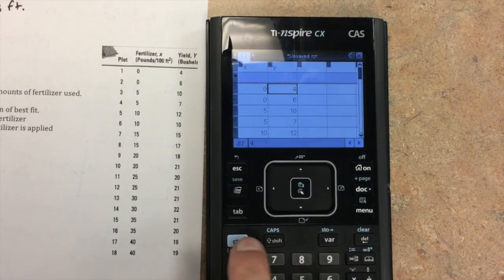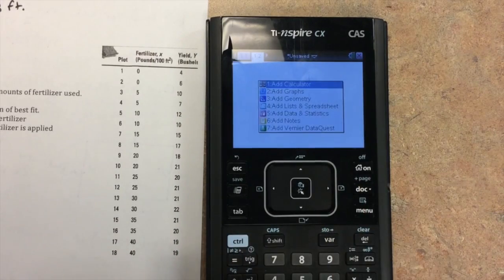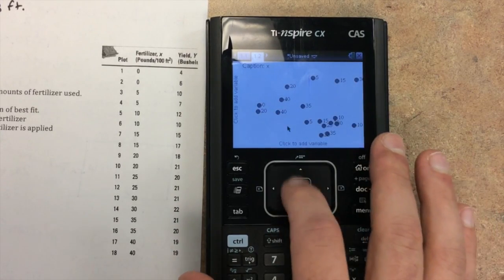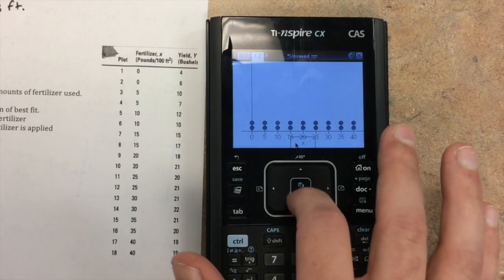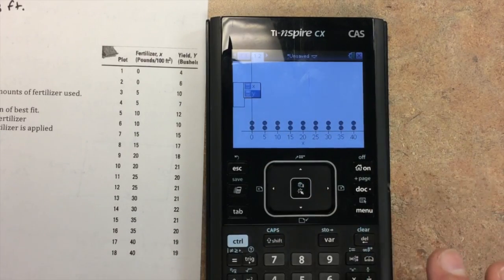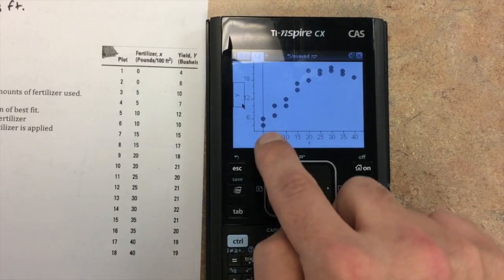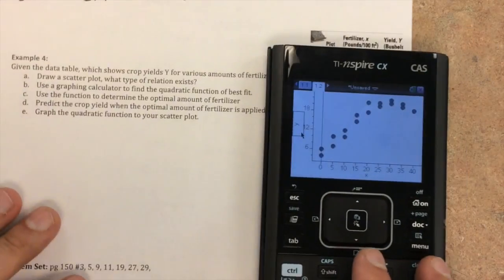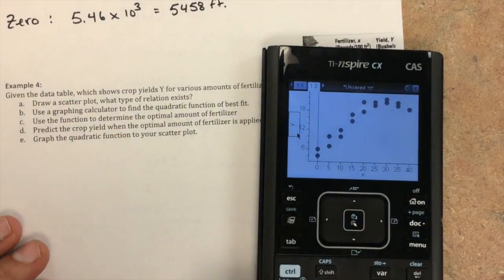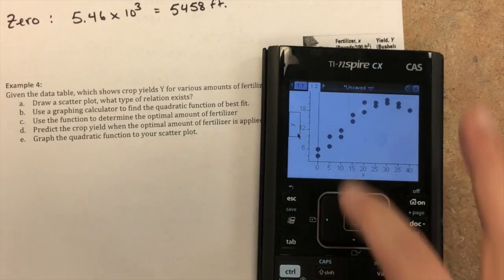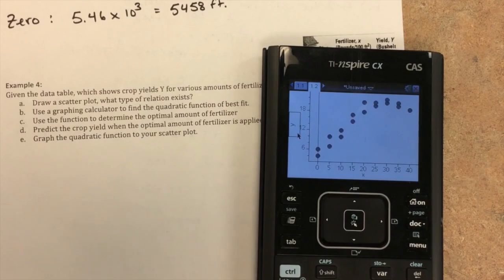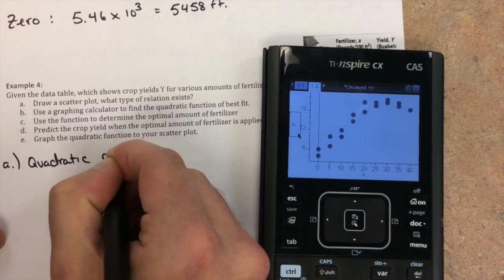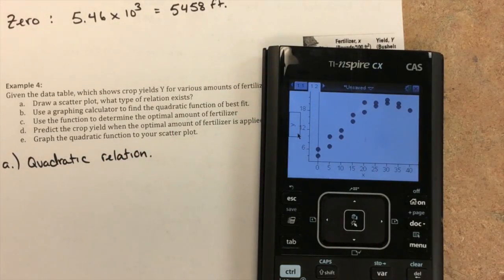Now, like we did before, we're going to hit control document to create a new document. And we're going to go down to add data and statistics. So, again, go back to my X axis. I select my X variable. Go to my Y. Select my Y column. And I can see that it's starting to curve. So, if I look at A, it says, draw a scatter plot. What type of relation exists? This is not quite linear. You can see that it starts going back down. So, this is a quadratic relation. Makes sense. We're doing quadratic relationships right here.